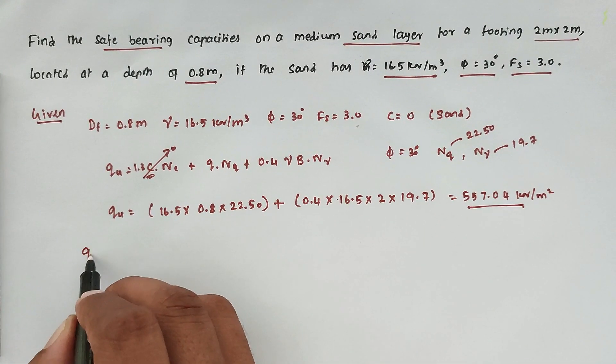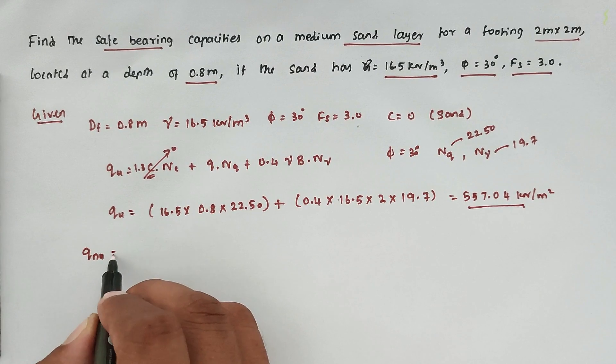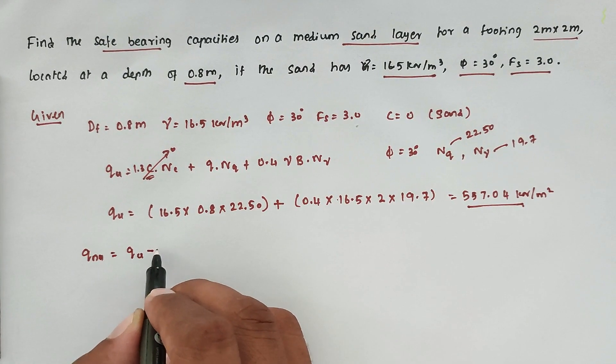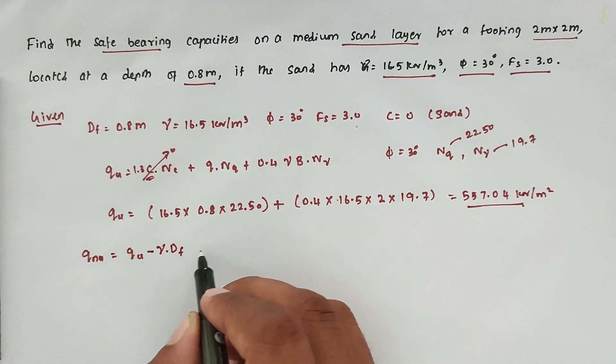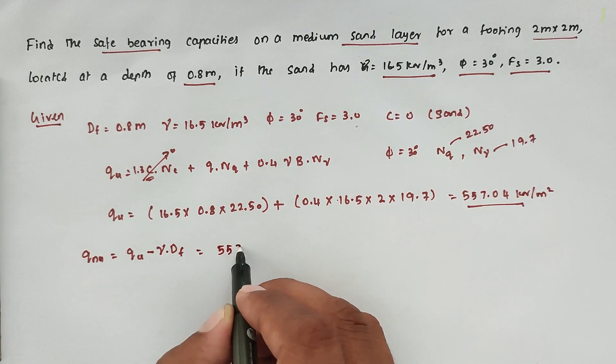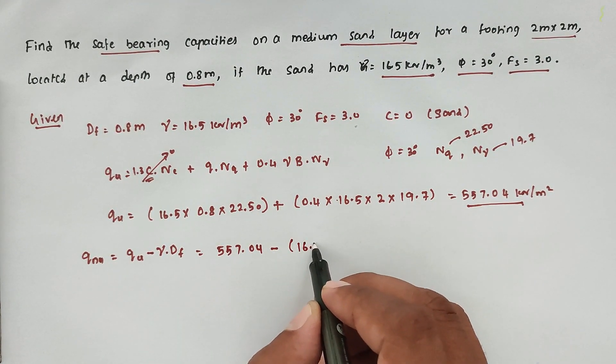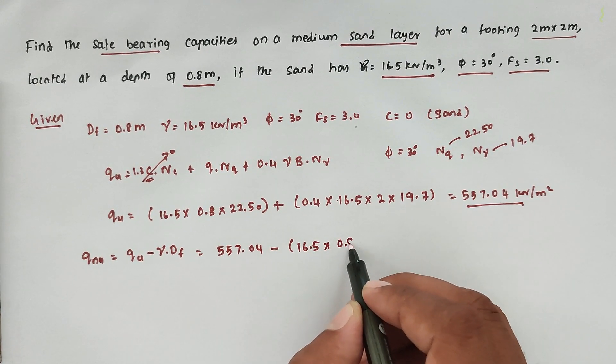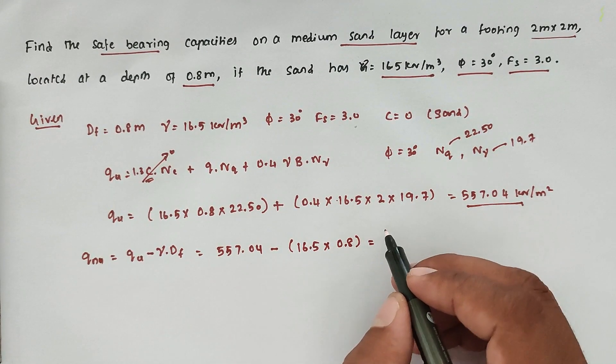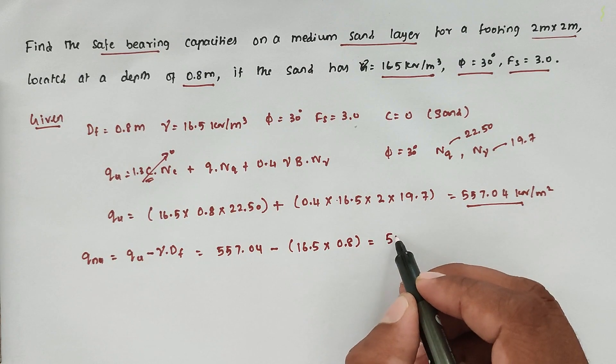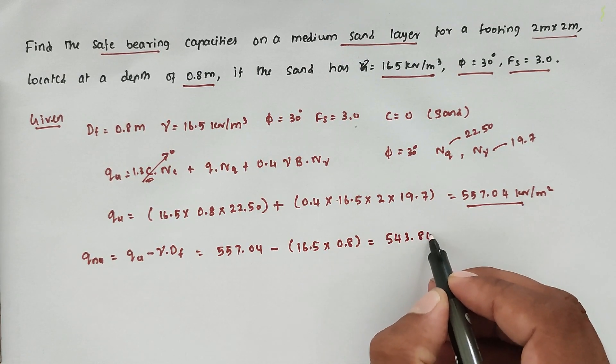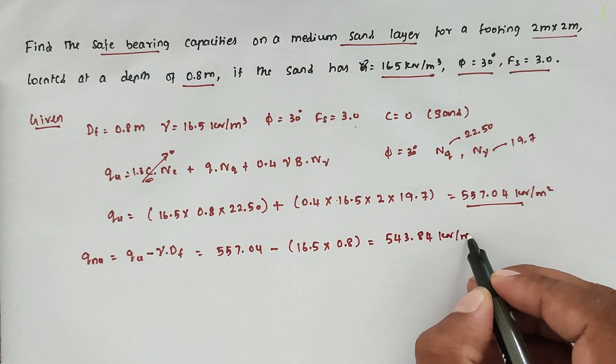So from that we can find qnu. qnu = qu - γ·Df. So 557.04 - γ value again 16.5 × 0.8. Solving this we get the value of 543.84 kN/m².